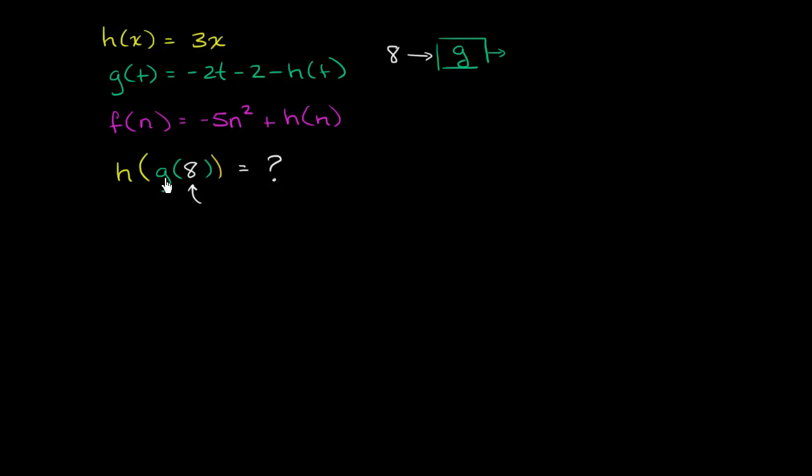And then that is going to produce g of 8. And then we're going to take whatever value that is and input that into the function h. So we're going to take this whole thing and input that into the function h. And what we will have will be h of what we inputted, h of g of 8.